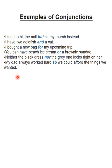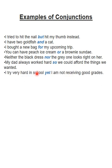چھٹی مثال: 'My dad always worked hard so we could afford the things we wanted' — یہاں 'so' نے جملوں کو جوڑا۔ ساتویں مثال: 'I try very hard in school yet I am not receiving good grades.' یہ دو جملے تھے — 'I try very hard in school' اور 'I am not receiving good grades' — ان دونوں کو 'yet' سے connect کر دیا۔ دونوں جملوں کو آپس میں جوڑنے کے لیے conjunction استعمال ہوا۔